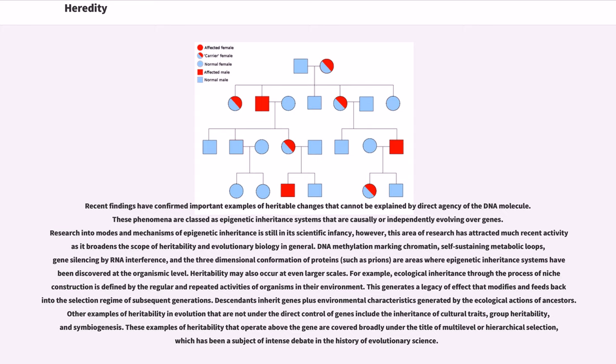Heritability may also occur at even larger scales. For example, ecological inheritance through the process of niche construction is defined by the regular and repeated activities of organisms in their environment. This generates a legacy of effect that modifies and feeds back into the selection regime of subsequent generations. Descendants inherit genes plus environmental characteristics generated by the ecological actions of ancestors.